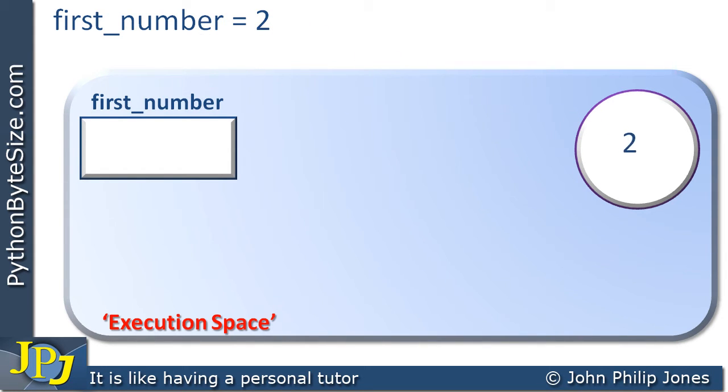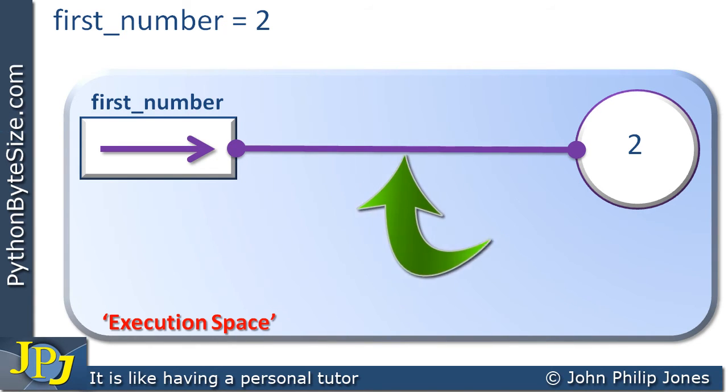The 2 is moved to the object. And the object reference will receive an arrow which represents the address of the object in the computer's memory. Or as we prefer to say here for this model, the arrow represents the location of the object in the execution space. Consequently, the object reference and the object are bound as we can see here.